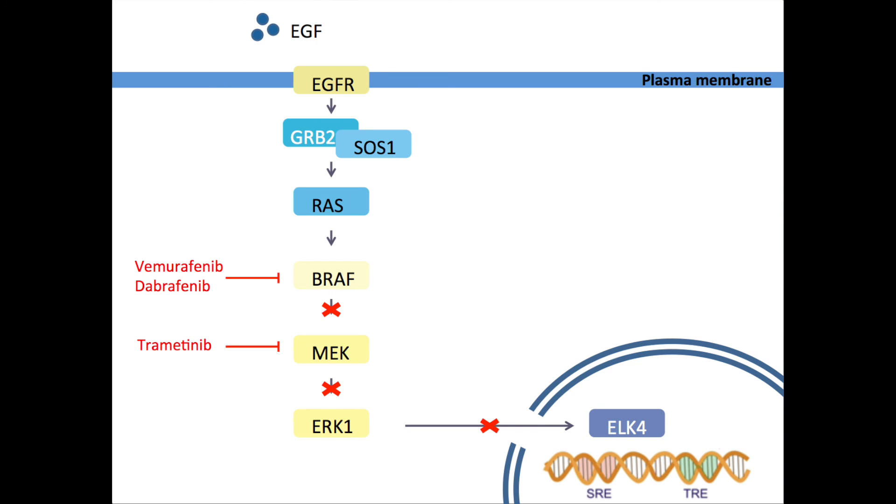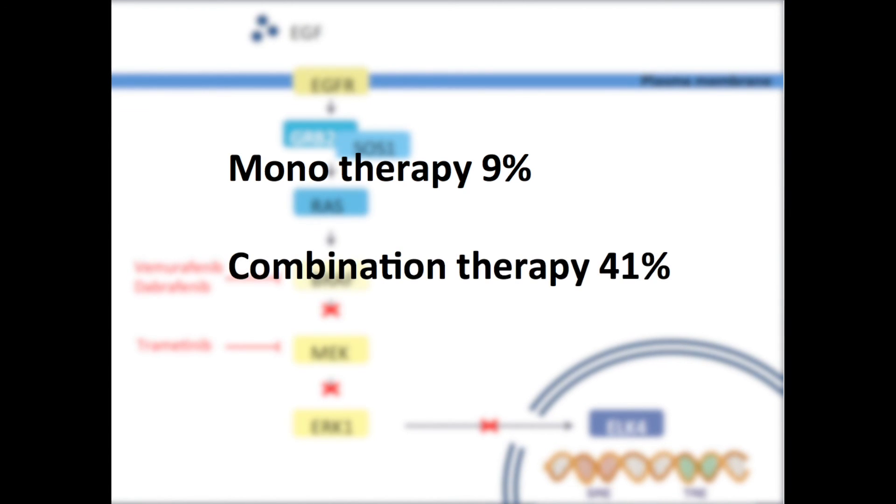One of the first combination therapies used in clinical research was dabrafenib and trametinib, a MEK inhibitor. This gave very promising results. When given dabrafenib alone, in only 9% of the patients, the tumor did not grow in one year, while when given both drugs, this was the case for 41% of the patients. Other combination therapies have shown similar results.